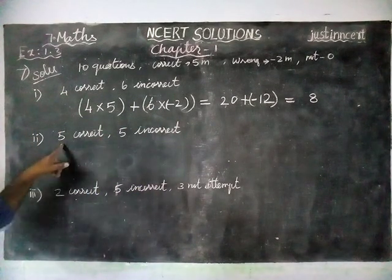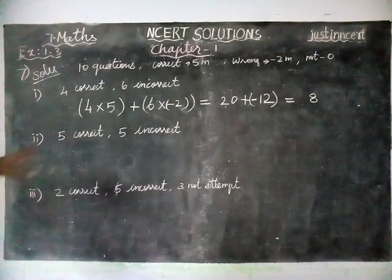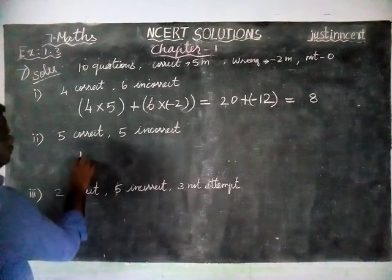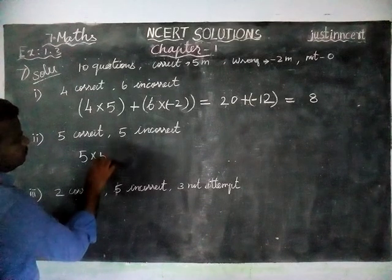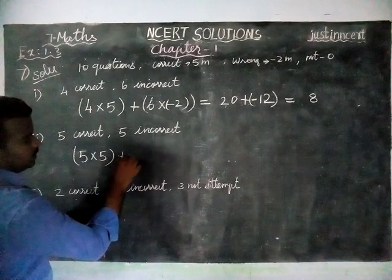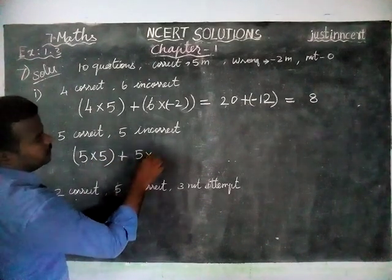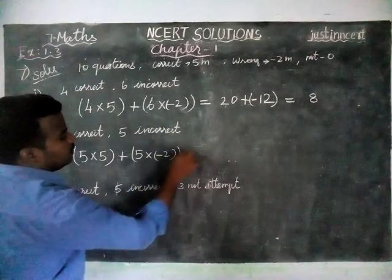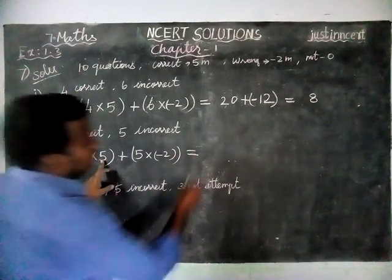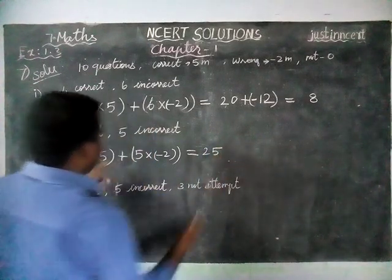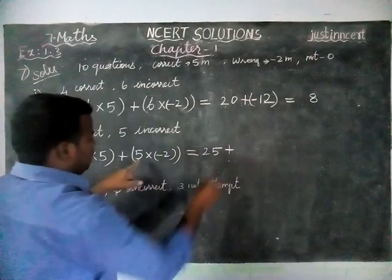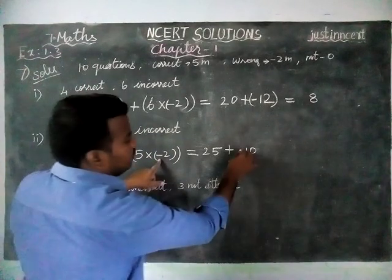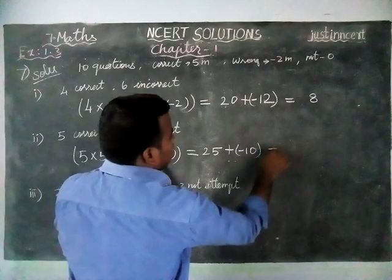And next, Reshma gets 5 correct answers, 5 incorrect answers. So, 5 into correct marks is 5 plus 5 into incorrect marks is minus 2 is equal to, 5 5s are 25 plus sign, 5 2s are 10 plus into minus is equal to minus 10.